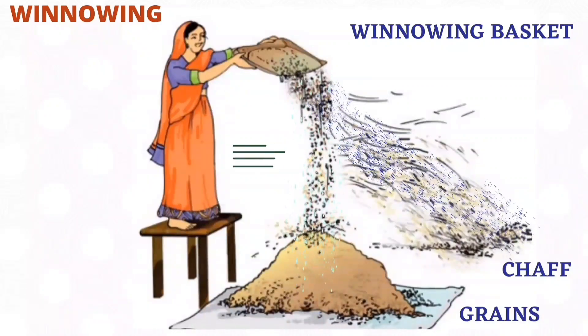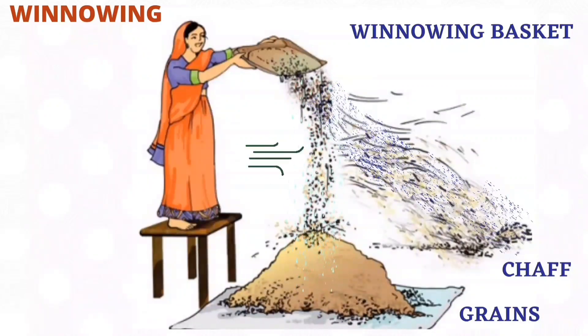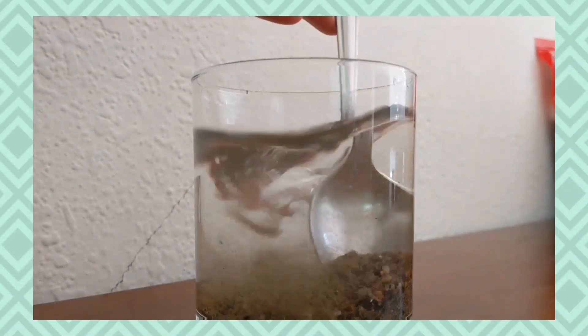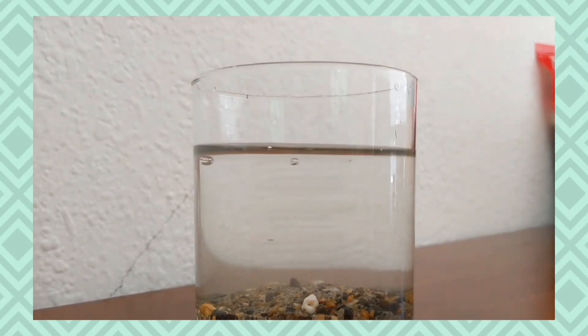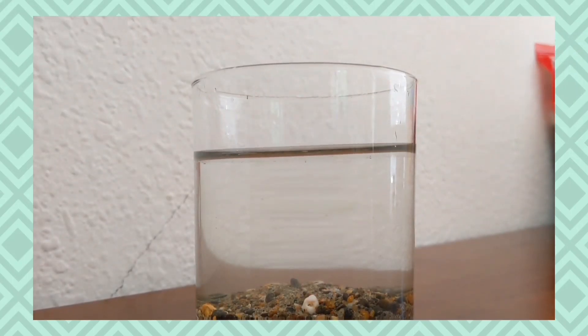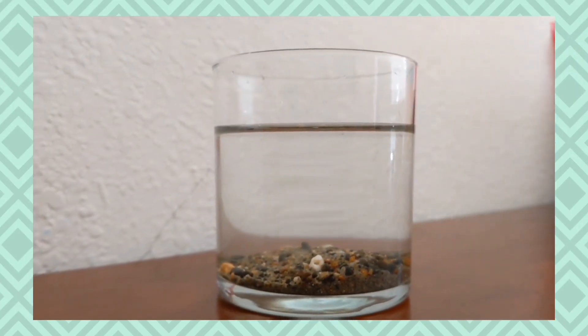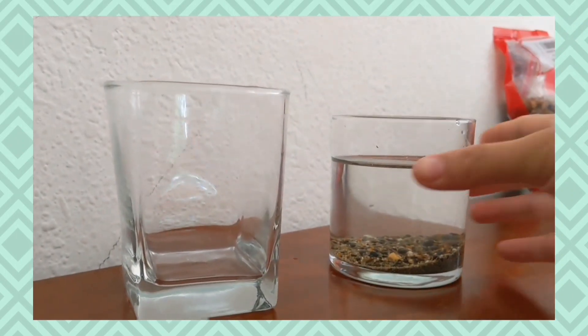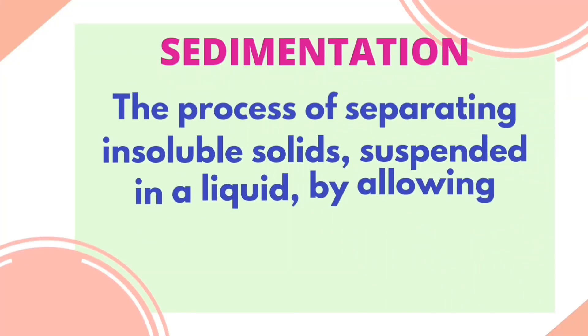Take a glass, fill it three-fourths with water, add some soil, and stir it with a spoon. Let it stand for half an hour. As the soil is heavier, it settles down at the bottom of the glass. This process is called sedimentation.